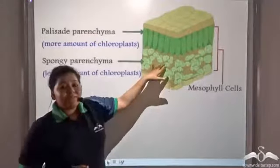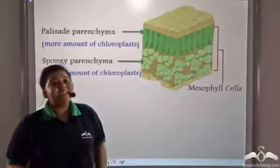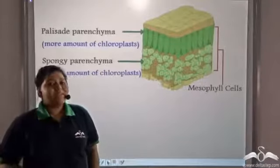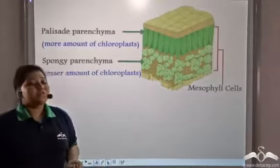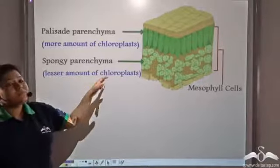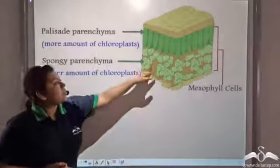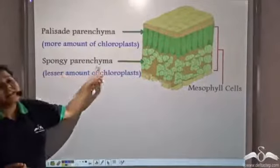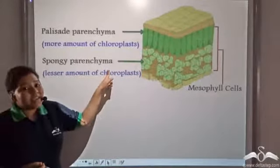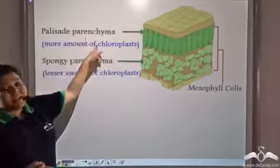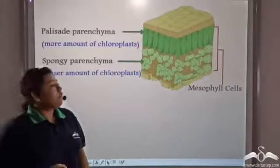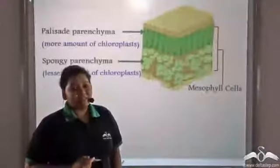This portion of the leaf which is not directly exposed to sunlight will have less amount of chlorophyll in the lesser amount of chloroplasts. These cells are known as spongy parenchyma. Together the palisade parenchyma and the spongy parenchyma form the mesophyll of a leaf.